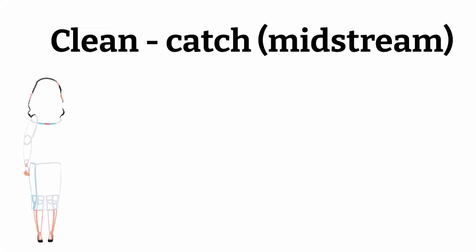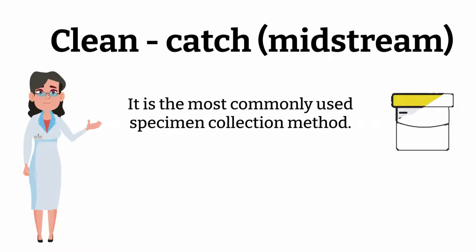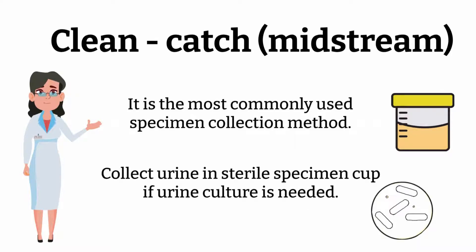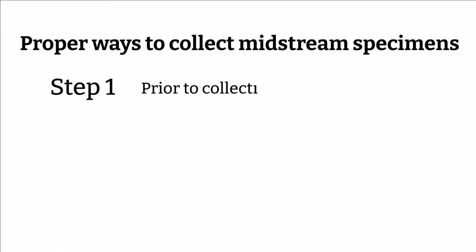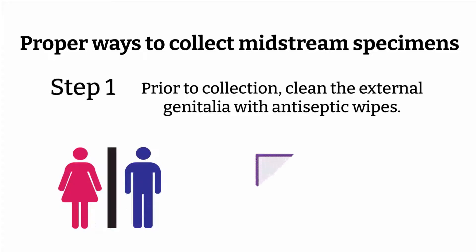Clean catch, or midstream specimen, is the most commonly used collection method and it is the easiest way. If the urine specimen is to be used for culture, it should be collected in a sterile cup — and it is almost always done in a sterile cup anyway, just in case a urine culture is necessary after urine analysis. For proper collection, prior to collection the external genitalia must be cleaned thoroughly with a mild antiseptic solution. Patients are usually given a packet containing a tissue soaked in mild antiseptic solution to clean the external genitalia with.